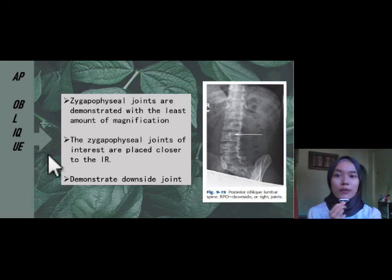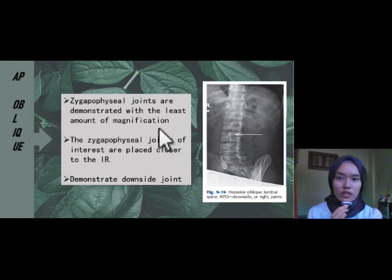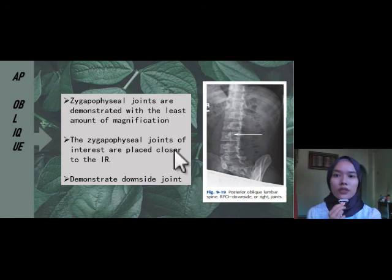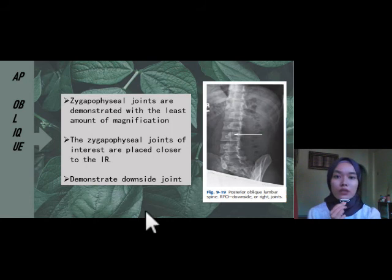For the AP oblique projection, the zygapophysial joints are demonstrated with the least amount of magnification. The zygapophysial joint of interest is placed close to the IR, so it will demonstrate the downside joint.